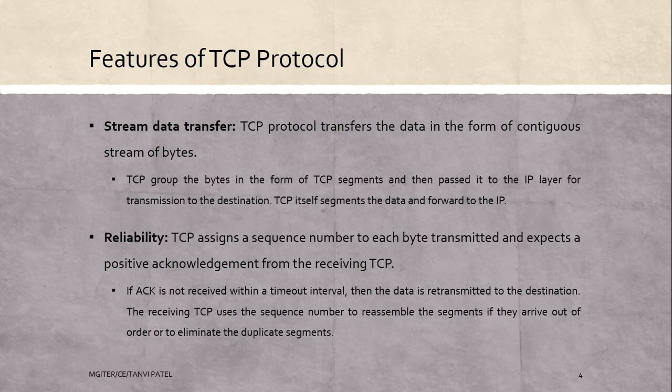Next is reliability. TCP assigns a sequence number to each byte transmitted and expects a positive acknowledgement from the receiving TCP. If acknowledgement is not received within a timeout interval, then the data is retransmitted to the destination. The receiving TCP uses the sequence number to reassemble the segments if they arrive out of order, or to eliminate duplicate segments.